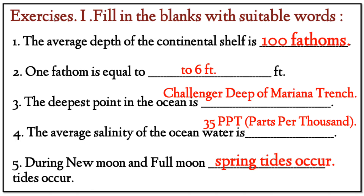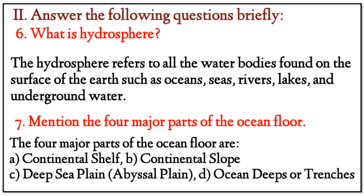Fill in the blanks with suitable words. First: the average depth of the continental shelf is 100 fathoms. Second: one fathom is equal to six feet. Third: the deepest point in the ocean is Challenger's Deep of the Mariana Trench. Fourth: the average salinity of ocean water is 35 parts per thousand. Fifth: during the new moon and full moon, spring tides occur.